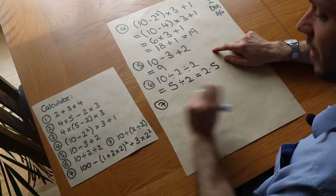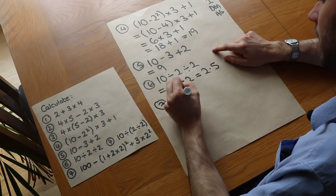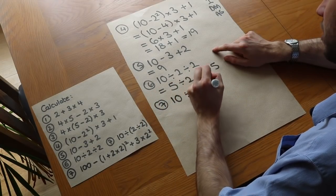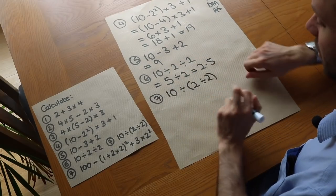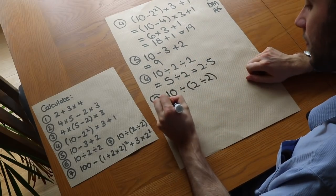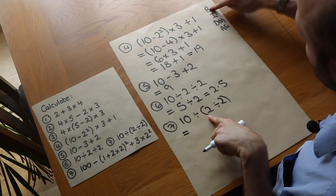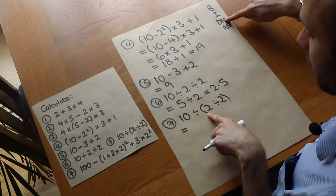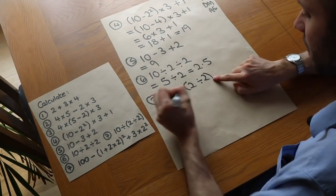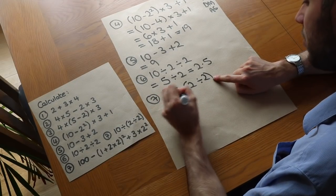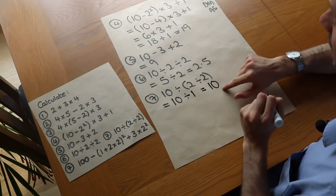Example 7: 10 divided by (2 divided by 2). This time I've put brackets around the 2 divided by 2, so we do the brackets first — brackets trump division. 2 divided by 2 is 1, so we end up with 10 divided by 1, which is just 10. So using brackets gives us a different value to what we got before.